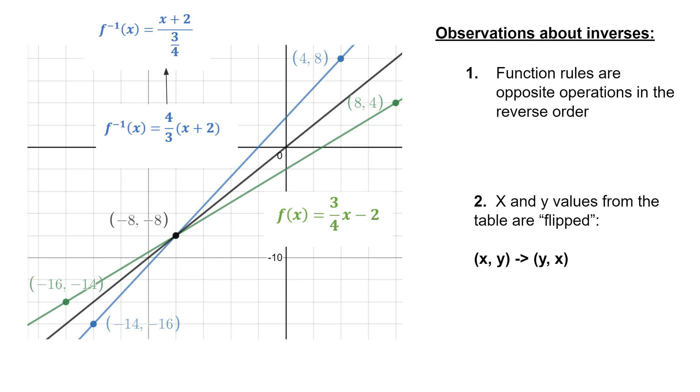Number two, the x and y values from the table are flipped. x, y becomes y, x, and we already saw that earlier in problem four. And that's true here as well. 4 comma 8 becomes 8 comma 4. Negative 16, negative 14 becomes negative 14, negative 16.